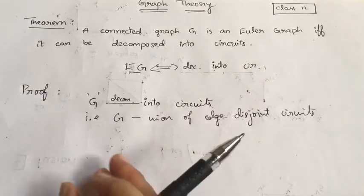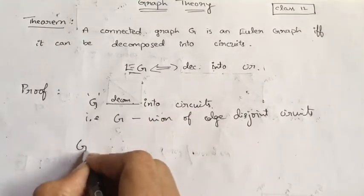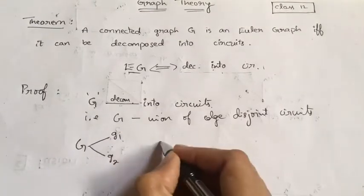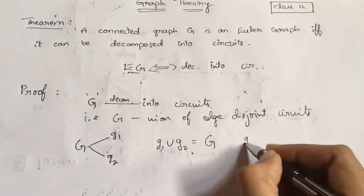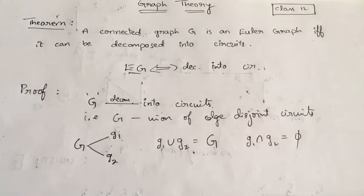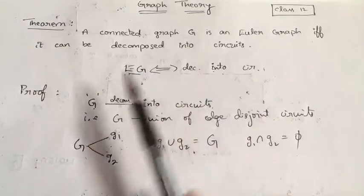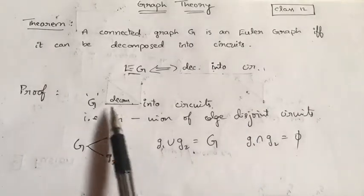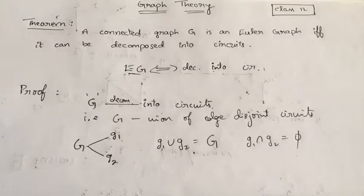Decomposition means if I have decomposed G into G1 and G2, then G1 union G2 gives me G and G1 intersection G2 is empty. So by the definition of decomposition, G is nothing but the union of edge disjoint circuits.